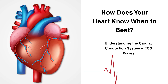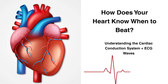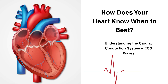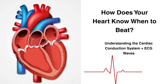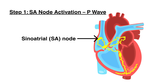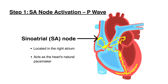The cardiac conduction system controls the timing of each heartbeat and directly corresponds to what we see on an ECG. Step 1: SA Node Activation and the P-Wave. The heartbeat begins in the sinoatrial (SA) node, located in the right atrium. It acts as the heart's natural pacemaker, generating an electrical impulse.